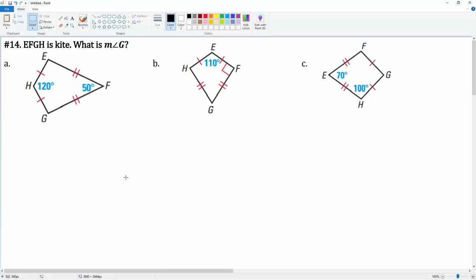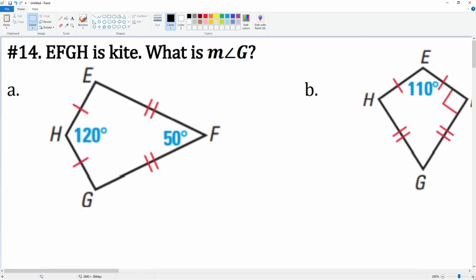We have EFGH, here's a kite. You're going to find that missing angle measurement, the value of angle G. We know that angle H is 120°, we know angle F is 50°, and the insides are unknown x's. These two are the same because of the property of the kite.